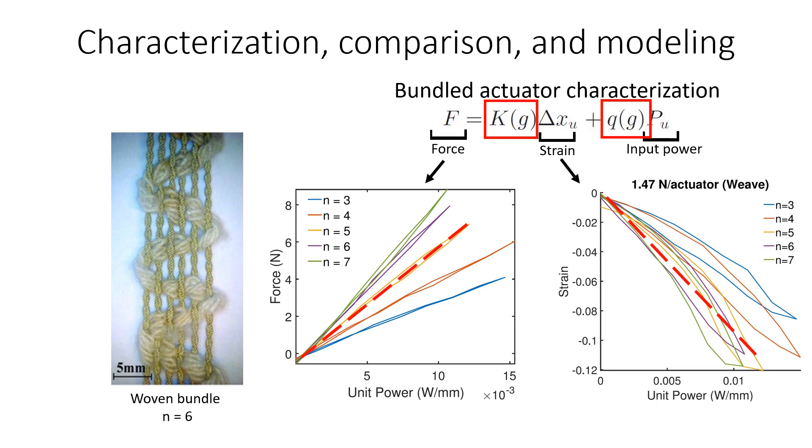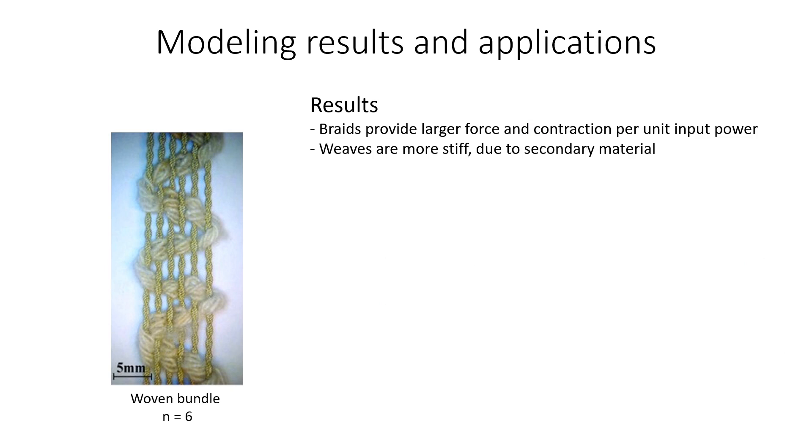By identifying a linear force model for each of the bundles, we use the identified parameters as comparison metrics between bundles of different configuration and size. For example, some of the results indicate that braided bundles generally provide larger force and contraction per unit input power, while woven bundles are stiffer due to their secondary material.